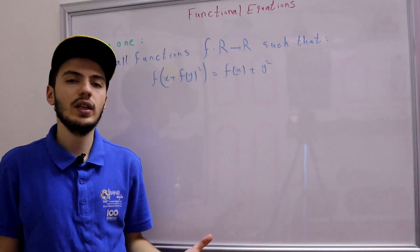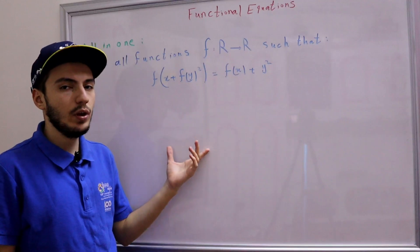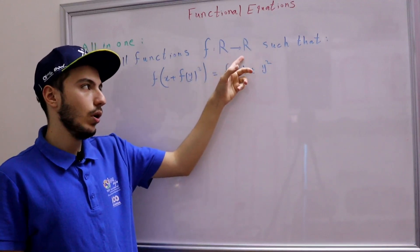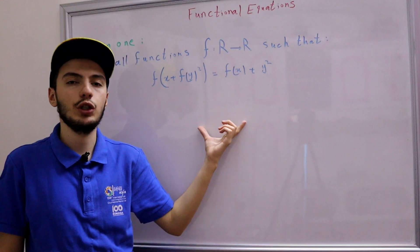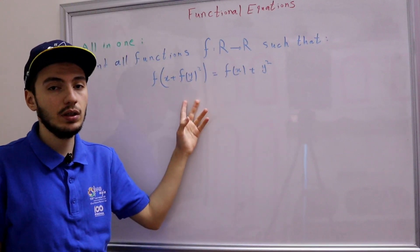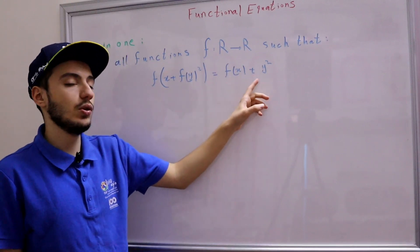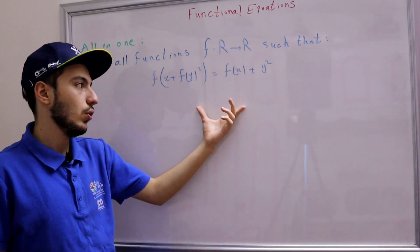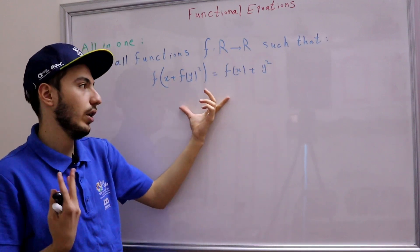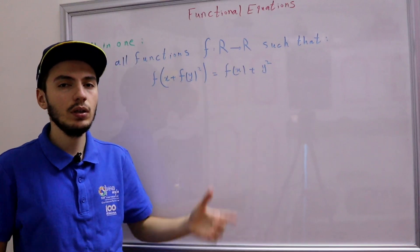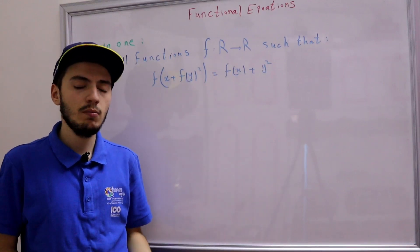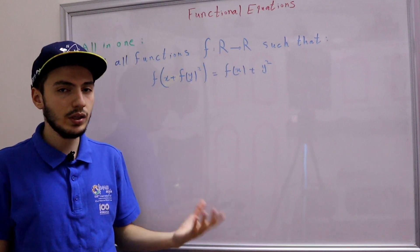Let's take a look at our problem. We're asked as usual to find all functions f from ℝ to ℝ such that f(x + f(y²)) = f(x + y²). So what is the first thing we do when we have such a simple functional equation? Well, we try to show that f is surjective or injective. Maybe we cannot, but let's try.